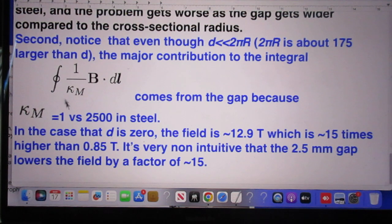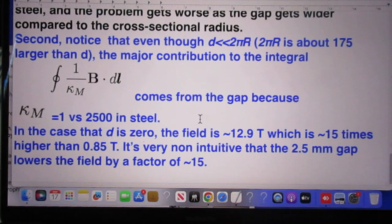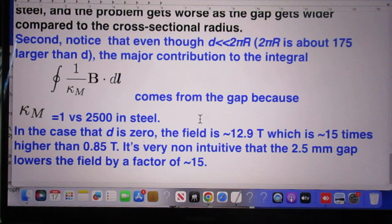So it all comes down to the fact that Kappa M through the steel has a 2500 here. But it is 1 through the gap. And so the gap dominates. That is very non-intuitive.